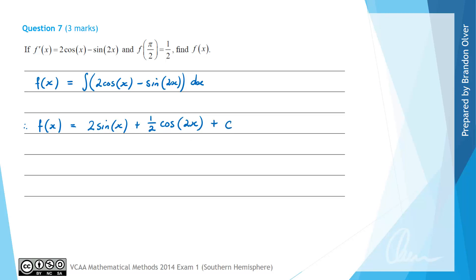At this stage we have +c which is a constant of integration. We're going to use our extra information that f(π/2) = 1/2 to find that value of c. So f(π/2) is going to equal 2 times sin(π/2) plus 1/2 times cos(π), and we still have our +c value, and we know that equals 1/2. That's the information given in the question.